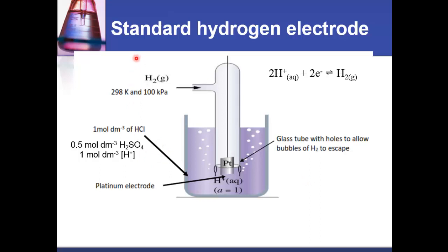This is a standard hydrogen electrode and you need to know the conditions for this. We start with H₂ gas at 298 K and 100 kilopascals of pressure. The solution is 1.0 mole per decimetre cubed hydrochloric acid. You could also use 0.5 mole per decimetre cubed H₂SO₄, since it's diprotic, giving 1 mole per decimetre cubed of H⁺. It doesn't matter which acid you use as long as you have 1 mole per decimetre cubed of H⁺ ions. There is a platinum electrode, and the hydrogen gas bubbles through with holes to let the gas escape.